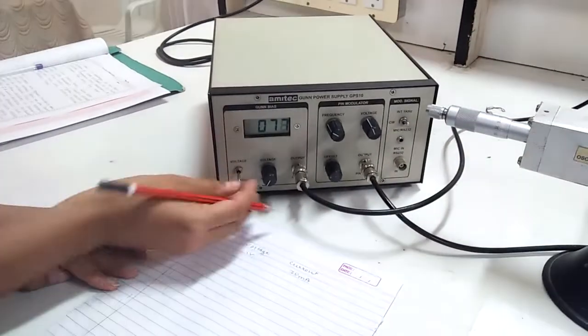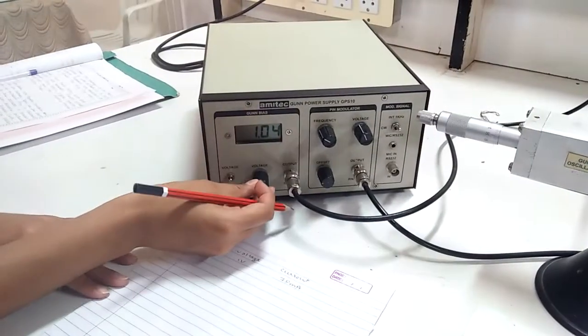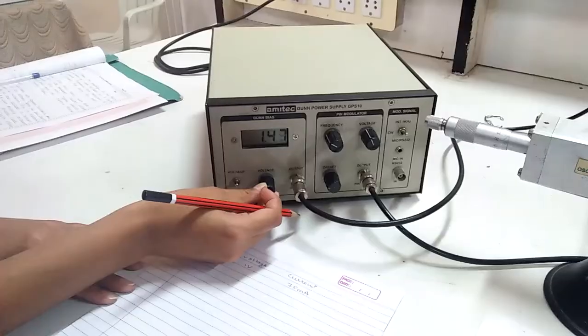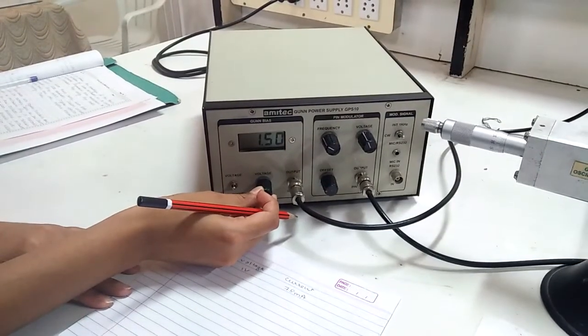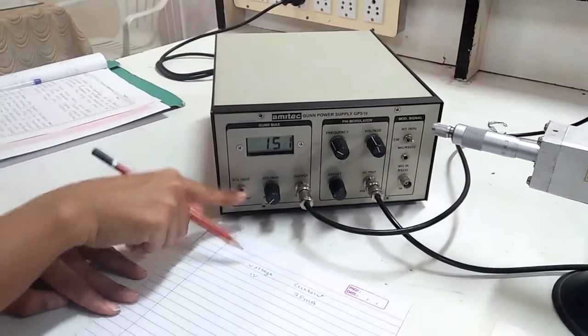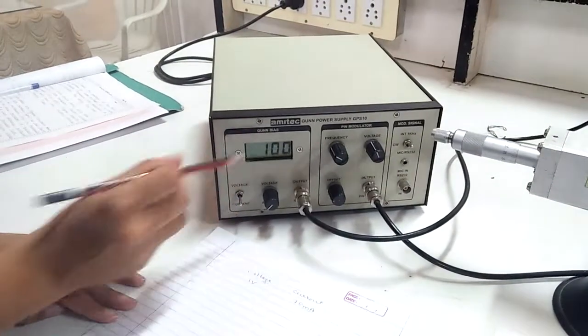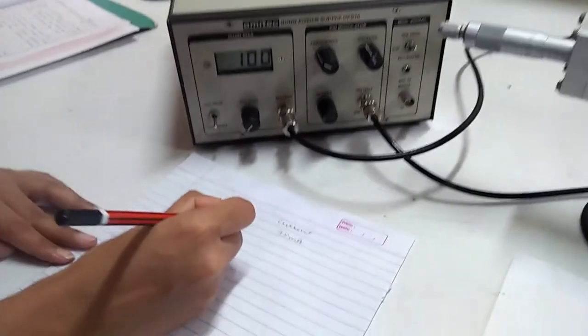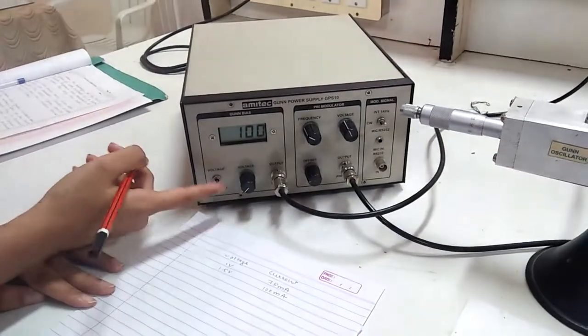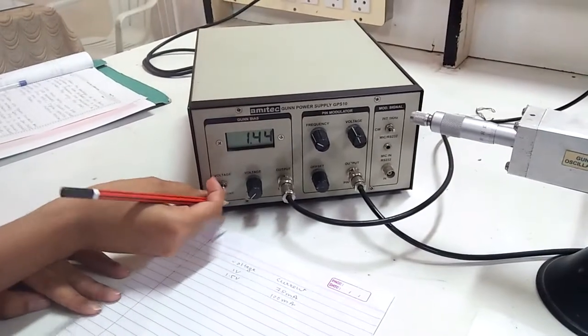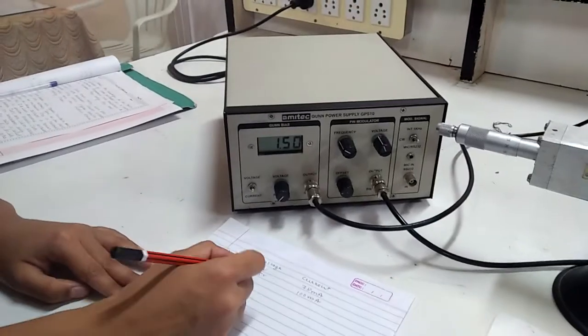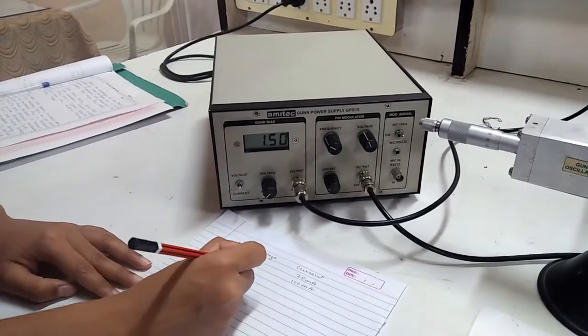Now we will increase the voltage by 0.5 at which we obtain current of 100 mA. Make sure your voltage will not increase above 9 volt and take similar readings at the interval of 0.5 volt.